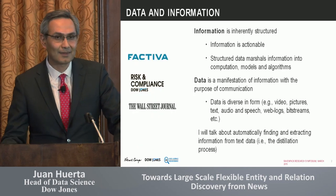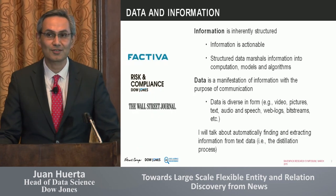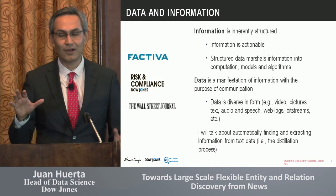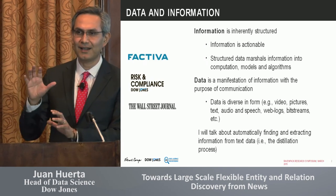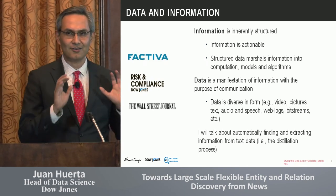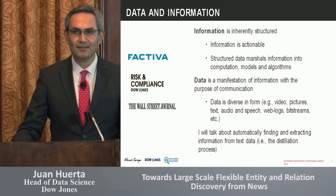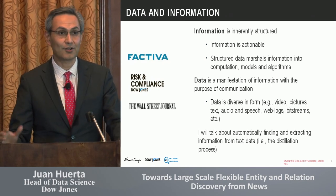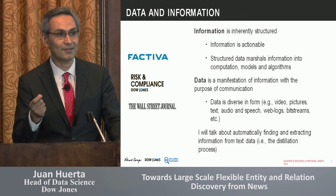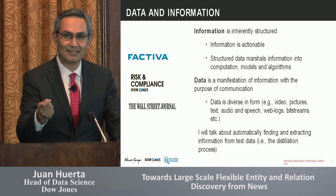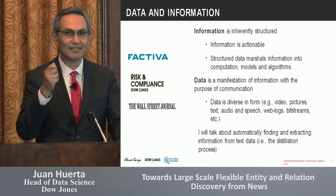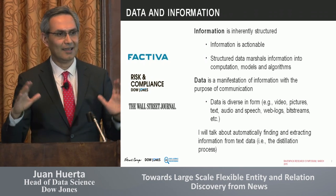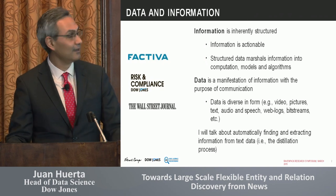At Dow Jones, we work and produce content and information. One very simple way to characterize information is to divide it into structured data and unstructured data. Structured data is very good — it's very friendly. It's information that you can plug directly into your models. Structured data is information that you can visualize. It's very clean and very straightforward.